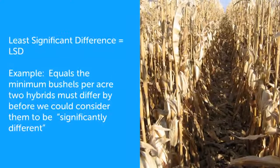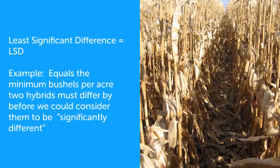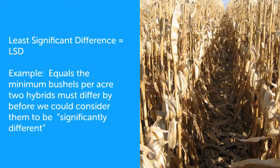A term commonly used in research is the Least Significant Difference, or LSD. In a hybrid variety trial, this is the minimum bushels per acre that two hybrids must differ by before we would consider them to be significantly different.